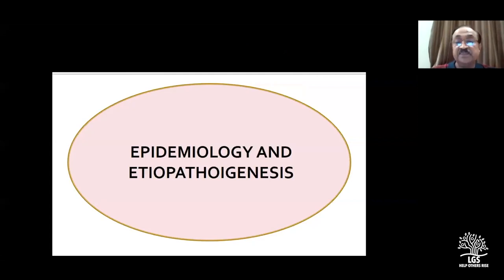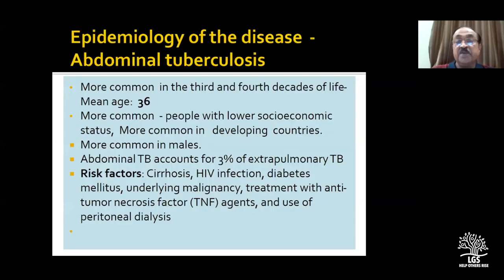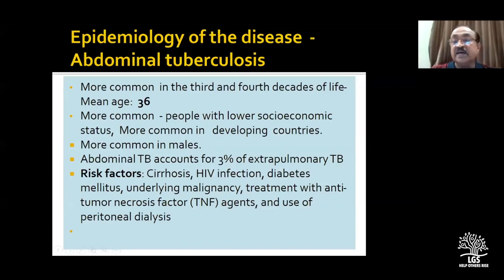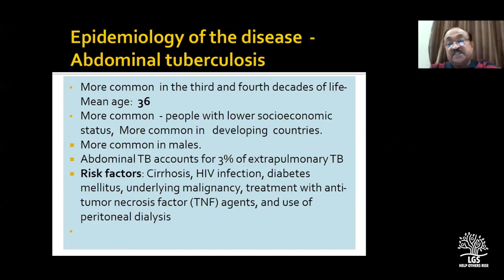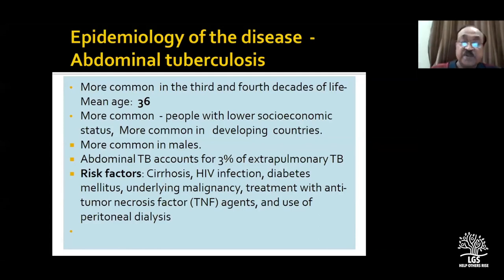Moving on to the epidemiology of abdominal tuberculosis: the mean age is around 36, so it's important that the young population is affected, preferably sometimes in low socioeconomic groups, and it is more common in males. Today with the increasing incidence of HIV, there are risk factors including diabetes, cirrhosis, malignant patients on treatment, and especially anti-tumor necrosis factor therapy.